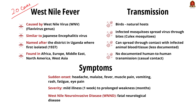West Nile fever is caused by a virus named the West Nile virus. It belongs to the genus Flavivirus — the Japanese encephalitis virus is also in the same family. This virus and the disease are named after the district of Uganda where the virus was first isolated in 1937. The virus is commonly found in Africa, Europe, the Middle East, North America and West Asia.